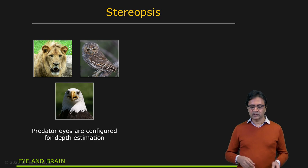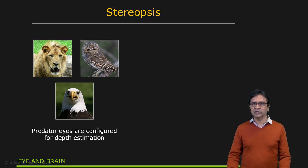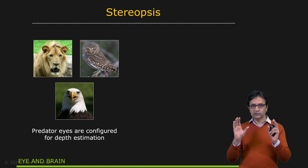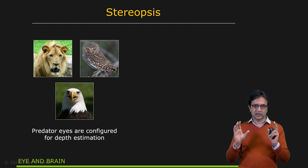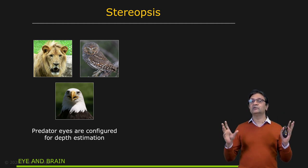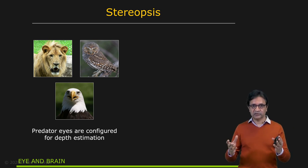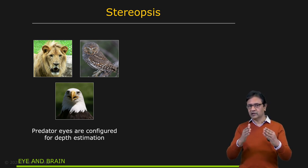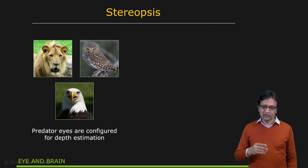Stereopsis actually manifests in many different ways in different animals. In the case of predators, the two eyes actually overlap in terms of field of view quite substantially. The reason is you want the overlap in the fields of view to be able to do stereo and then depth perception. Predators are not only looking for prey, but they also want to know exactly where prey is in terms of depth so that they can strategize their next move.